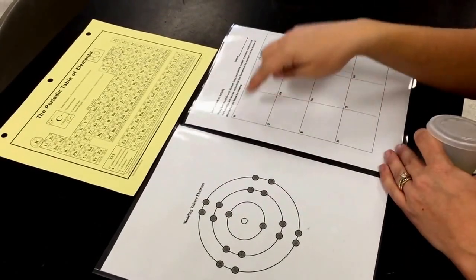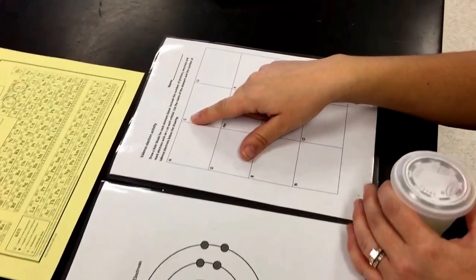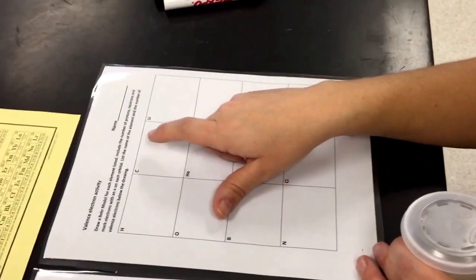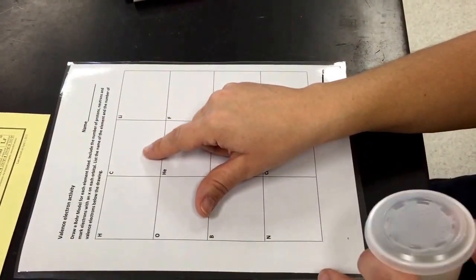On the right, I have boxes. In each box is a symbol for an element where you will draw a dot for the nucleus of the atom and then you're going to draw little x's that represent the electrons that orbit that nucleus.